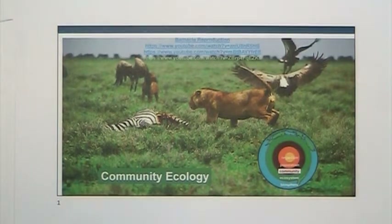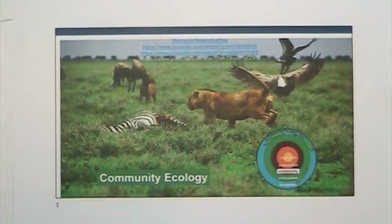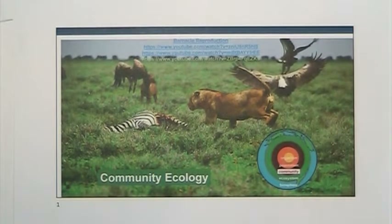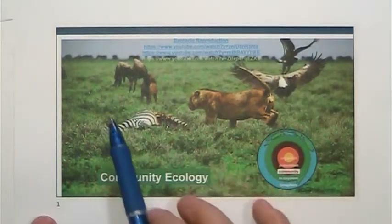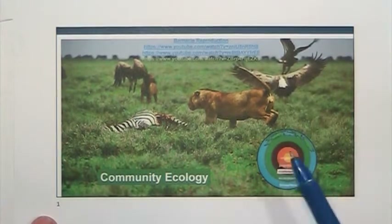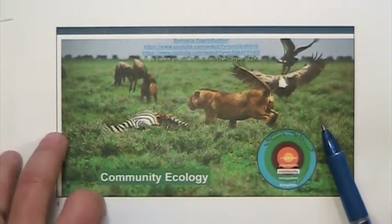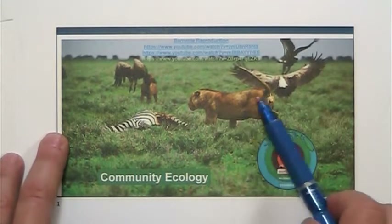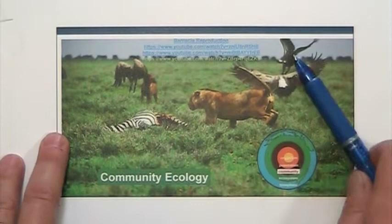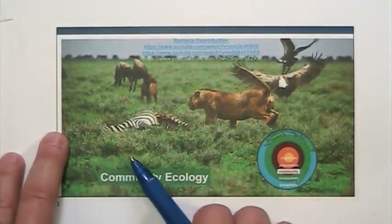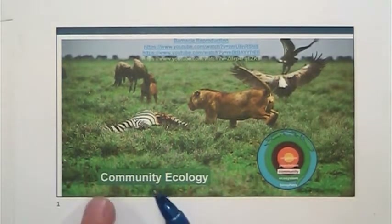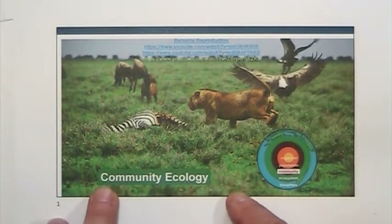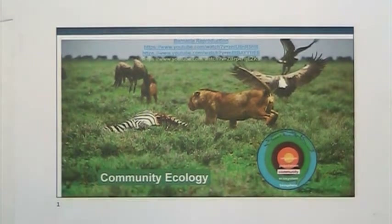These are your notes for Community Ecology, Chapter 54. Last time we talked about populations, groups of individuals of the same species. Now what we are going to talk about is communities, basically all the living organisms in an ecosystem, the interactions between all the living organisms. Remember, not only includes the animals, includes the plants, includes the fungi, includes the bacteria and protista in the soil, includes everybody in an ecosystem.